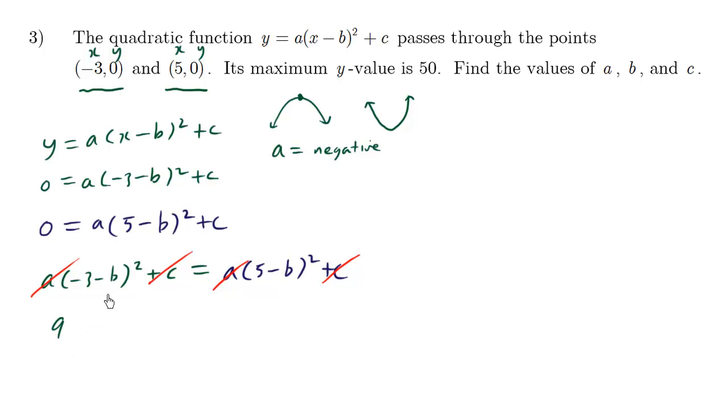Negative 3 times negative 3 is 9. Negative 3 times negative b is 3b times 2 is plus 6b. Negative b times negative b is positive b squared. So just expand out this binomial.